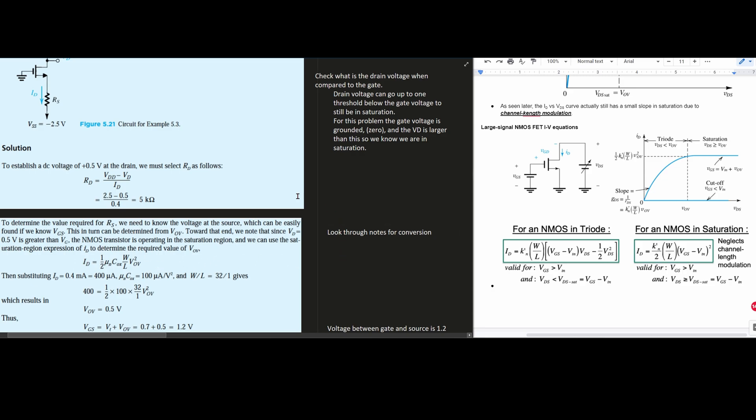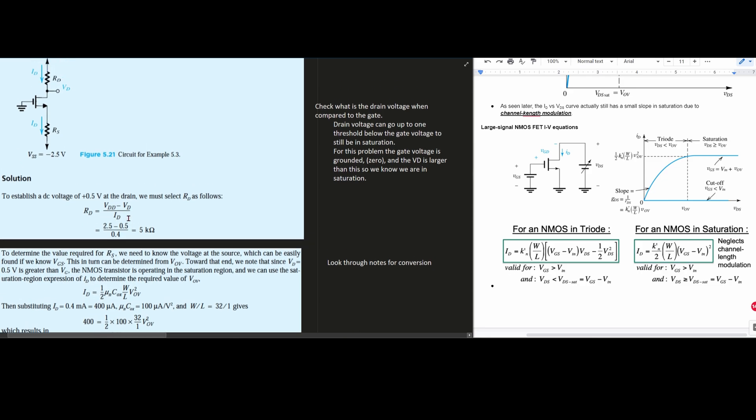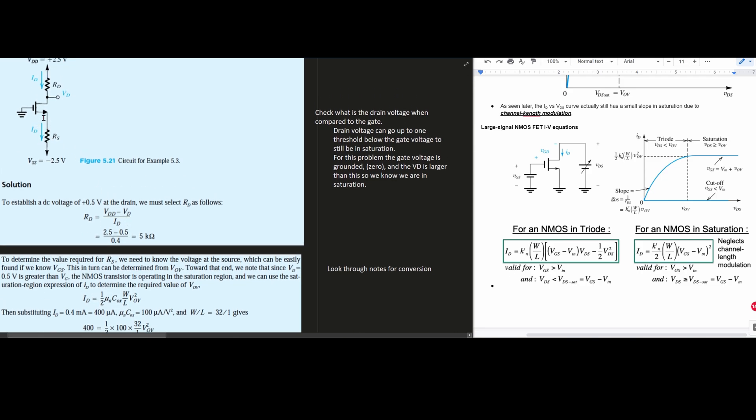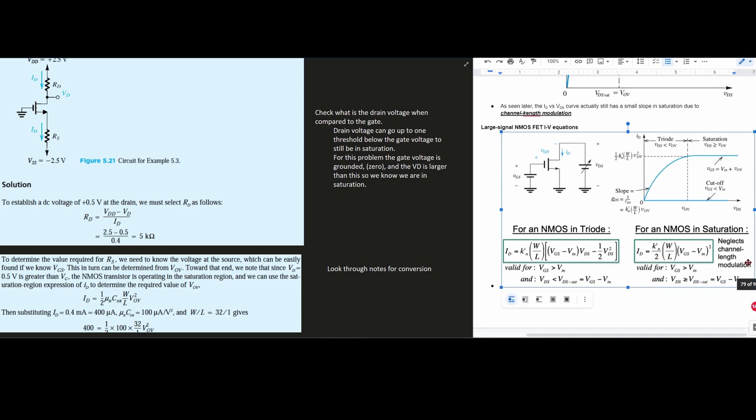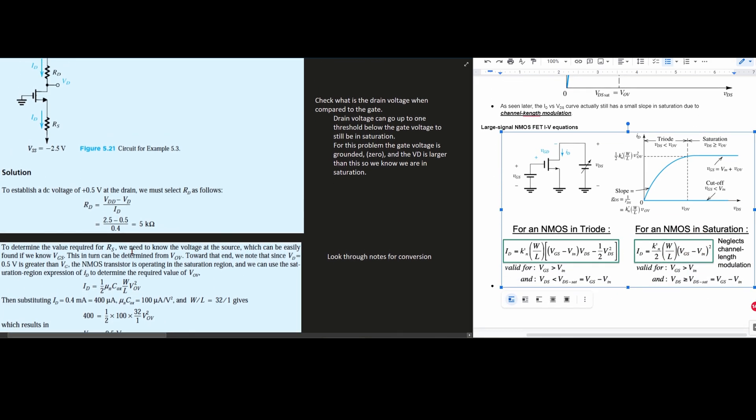Let's look through the notes for this. Basically what we need to do is find the resistance here. A way we would do that, knowing it's in saturation, is to look at the notes linked below the like button. We're going to be on about page 79 for an NMOS in saturation. So we have something that looks like this, though it's a little bit different because we're not given all of these things specifically here.